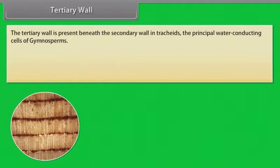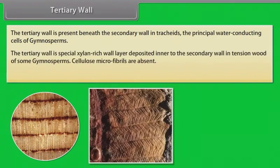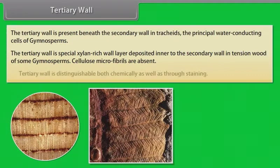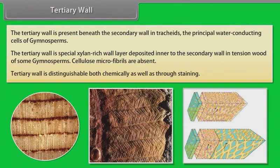Tertiary wall. The tertiary wall is present beneath the secondary wall in tracheids, the principal water-conducting cells of gymnosperms. It is a special xylem-rich wall layer deposited inner to the secondary wall in tension wood of some gymnosperms. Cellulose microfibrils are absent. The tertiary wall is distinguishable both chemically as well as through staining.